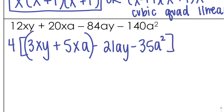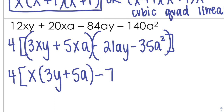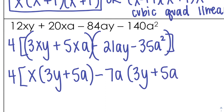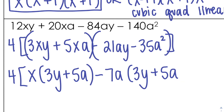Now I'm going to group it. Looking at the first half — still keeping my 4 in the bracket, can't forget about it — the only thing the first half has in common is x, so I take out x and I'm left with 3y plus 5a. Then looking at the second half: 21 and 35 have a 7 in common, and they both have an a. I take out negative 7a and I'm left with 3y plus 5a — positive — because negative 7a times positive 5a gives negative 35a².